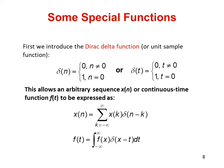Now we take a look at some special functions. First, we introduce the Dirac-delta function denoted by delta[n], which is 0 if n is not equal to 0 and 1 if n equals 0. This allows an arbitrary sequence X[n] or continuous time function f(t) to be expressed in terms of its discrete counterpart. So X[n] can be represented as summation from minus infinity to plus infinity of X[k] times delta[n minus k]. Similarly, in integration form, f(t) equals the integral from minus infinity to plus infinity of f(x) times delta(x minus t) dt.